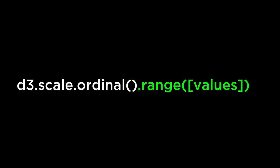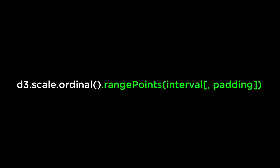D3.scale.ordinal.range is for a range that has discrete values. If values are specified, it sets the output range of the ordinal scale to the specified array of values. The first element in the domain maps to the first element in the range, the second to the second, the third to the third, and so on. If there are fewer elements in the range than the domain, the scale recycles values from the start of the range. The range is intended for discrete values that match the number of domain inputs — for example, Spanish number words as the domain mapped to English number words as the range.